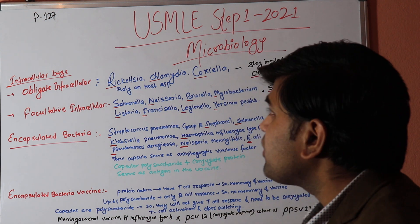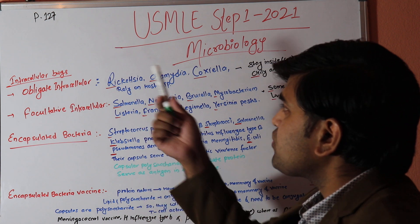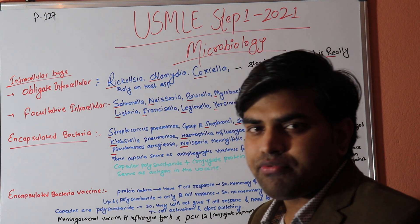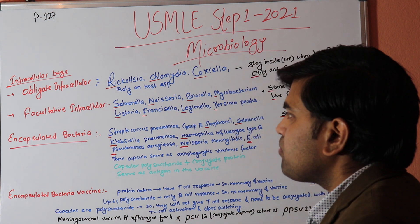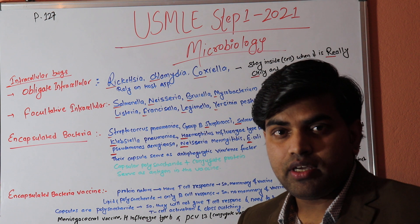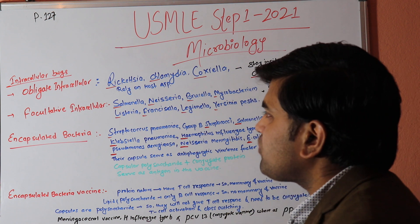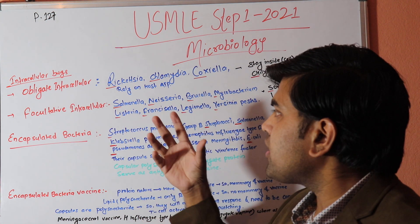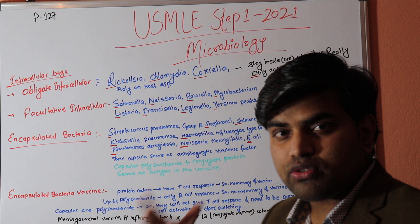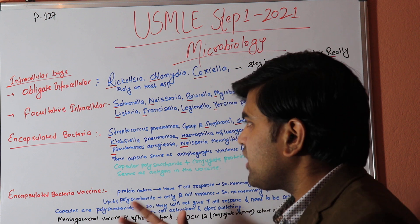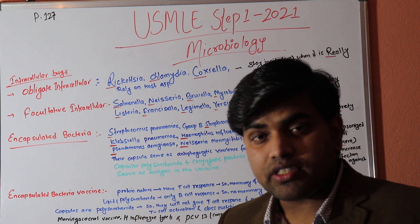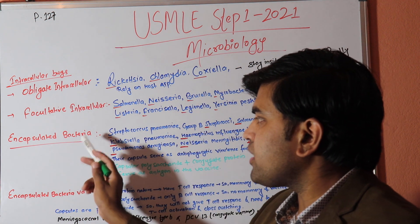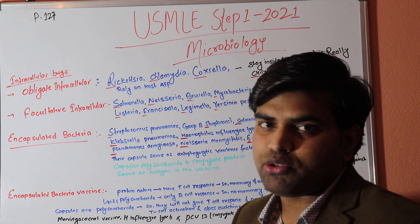Hello and welcome. Today we will be discussing page 127, that is USMLE Step 1 Microbiology Lecture 5. Today we will discuss the important high-yield points. We will be talking about intracellular bugs — there are some formulas to remember those bugs — because bugs and drugs need to be remembered carefully. Then we'll talk about encapsulated bacteria and vaccines made for encapsulated bacteria.